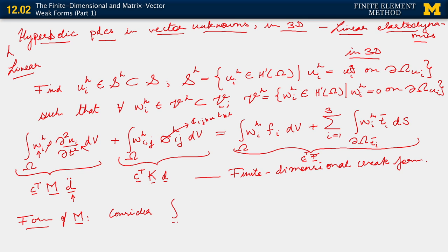Okay, so we consider integral over omega w^h_i ρ second time derivative of u_i^h - sorry, there should be an h there and an h here also - dV, okay? We recall that this is simply a sum over the elements, integral over omega_e w^h_i ρ second time derivative of u_i^h.